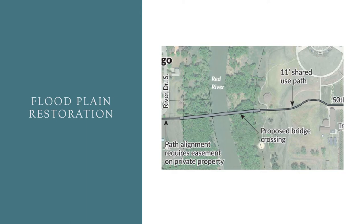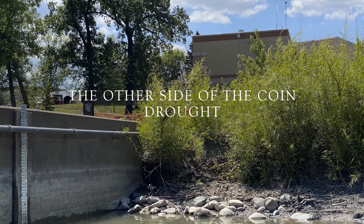Some cities have chosen to establish a park adjacent to the river, restoring part of the river's natural floodplain. When the river rises, it can flood onto lightly developed parkland and not into homes or other heavily developed areas. In some of these areas, the city has chosen to combine floodplain restoration with the use of dikes as a way to provide multiple options to deal with floodwaters.